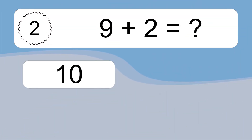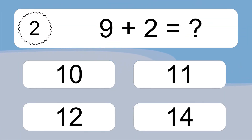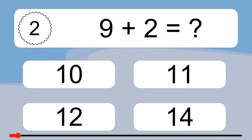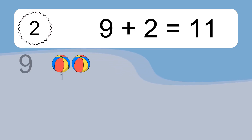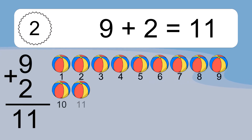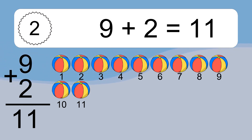9 plus 2 equals what? 9 plus 2 equals 11. Let's count it: 1, 2, 3, 4, 5, 6, 7, 8, 9, 10, 11.